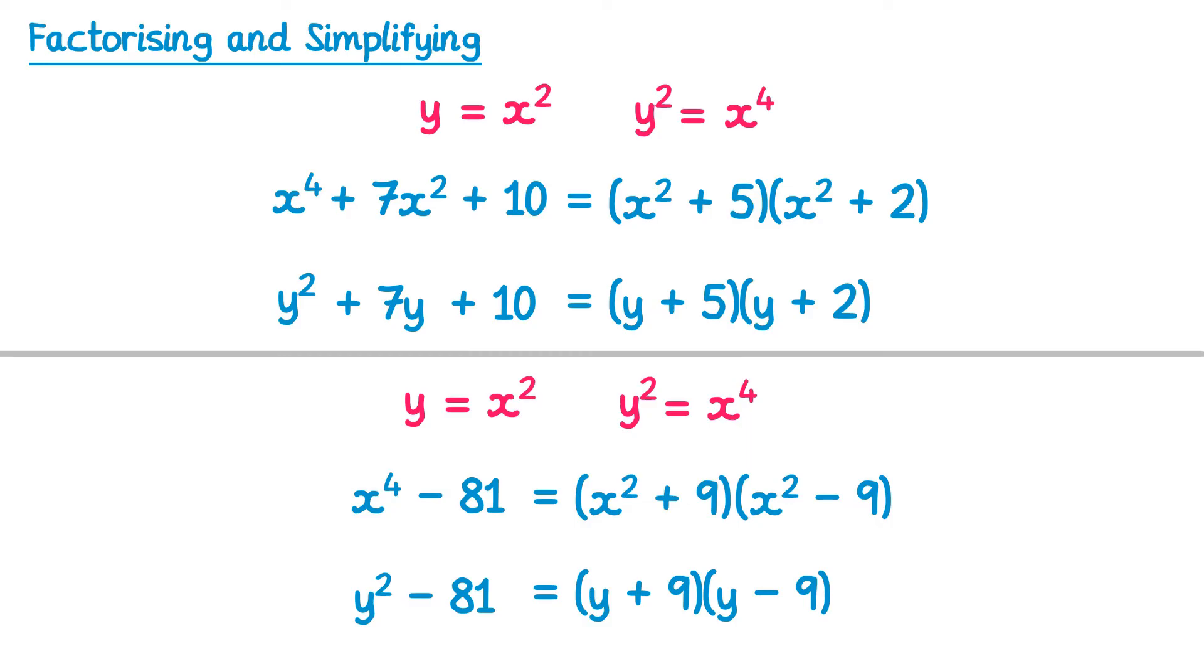Now at this point you may think we're finished, however this second bracket here is also a difference of two squares. This would factorise to give (x + 3)(x - 3). So the full solution is (x² + 9)(x + 3)(x - 3).